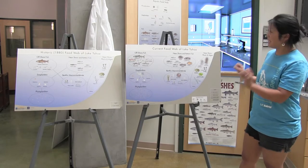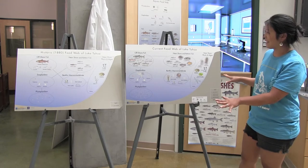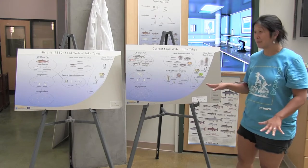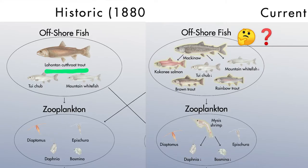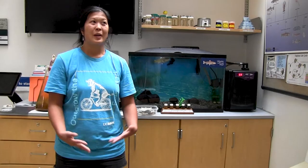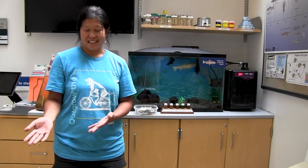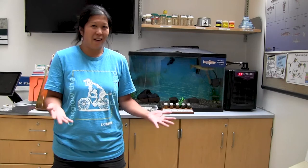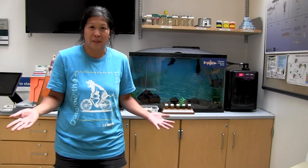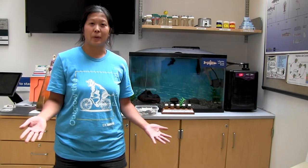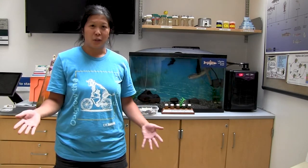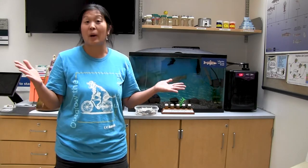But the big difference I want to talk about here — and the keyword is 'big' — it's the big species. It's the lack of the Lahontan cutthroat trout in our current food web. Something happened between 1880 and now that caused the Lahontan cutthroat trout to disappear and the lake trout, or Mackinac, to rise to the top of the aquatic food web.